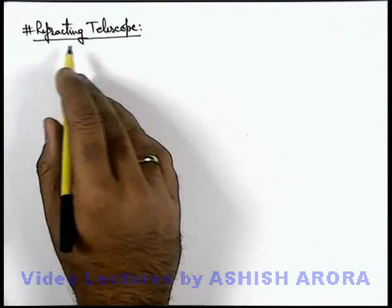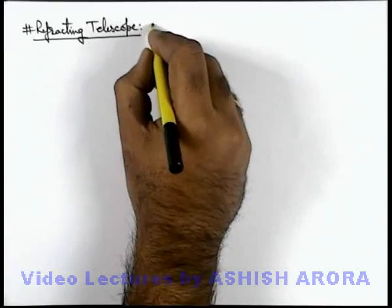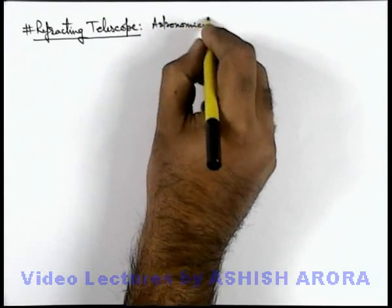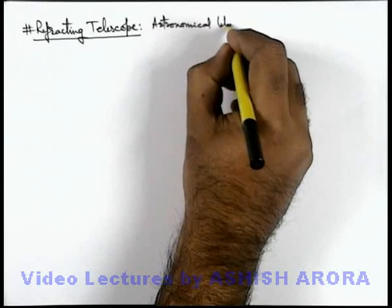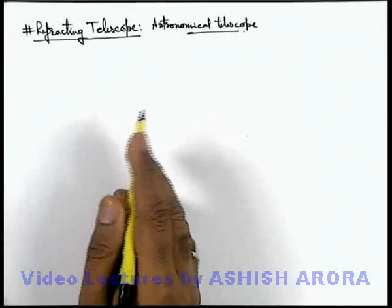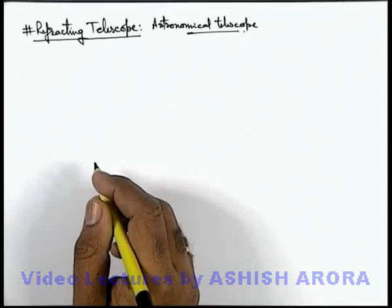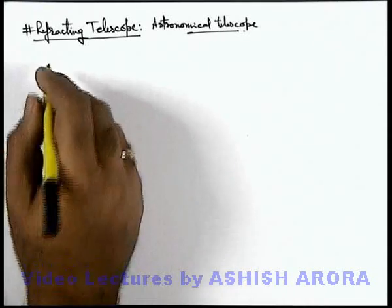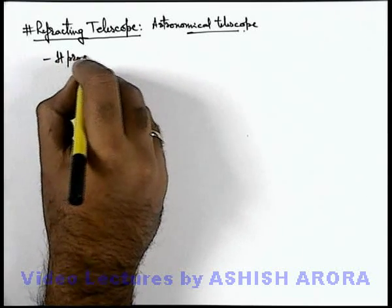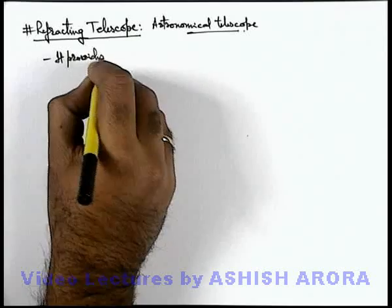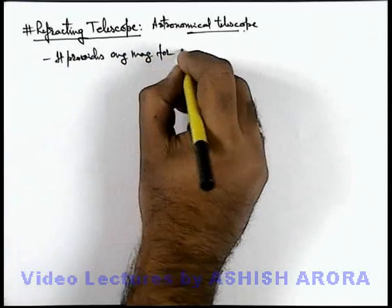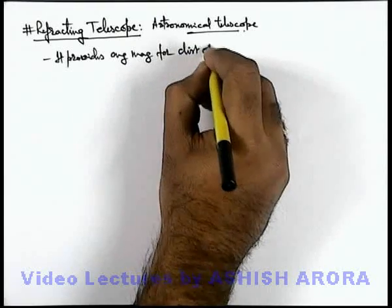Let us now discuss the refracting telescope, also called the astronomical telescope, because this telescope is used to provide angular magnification for heavenly objects or far away located distant objects. In refracting telescope, it provides angular magnification for distant objects.